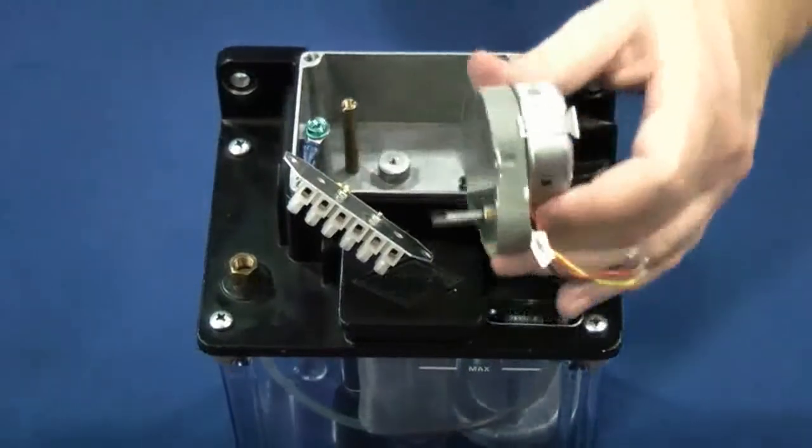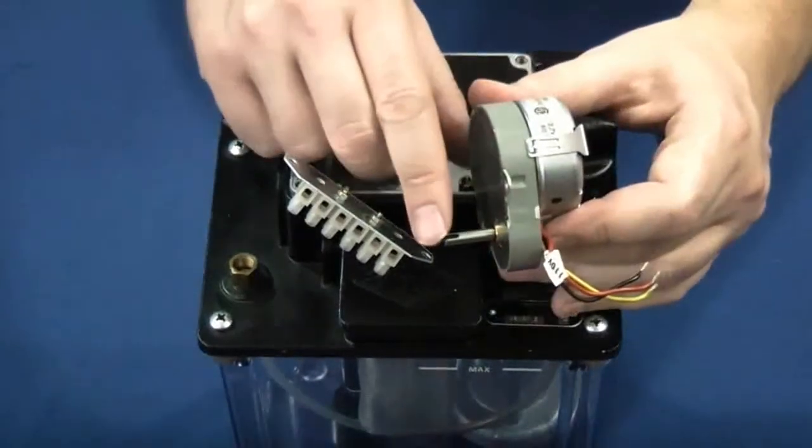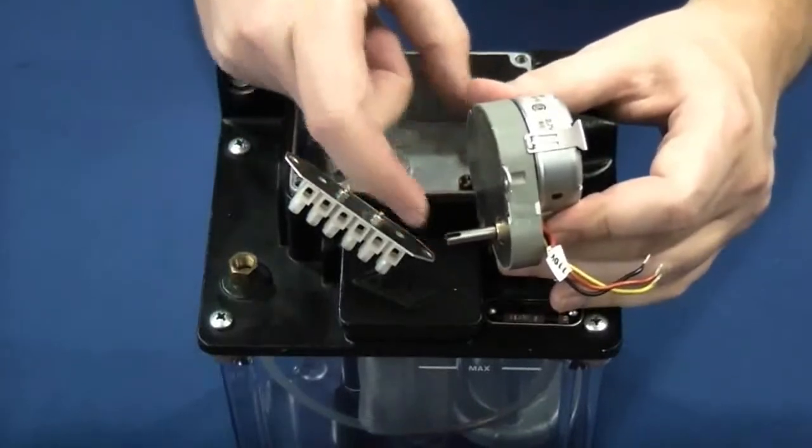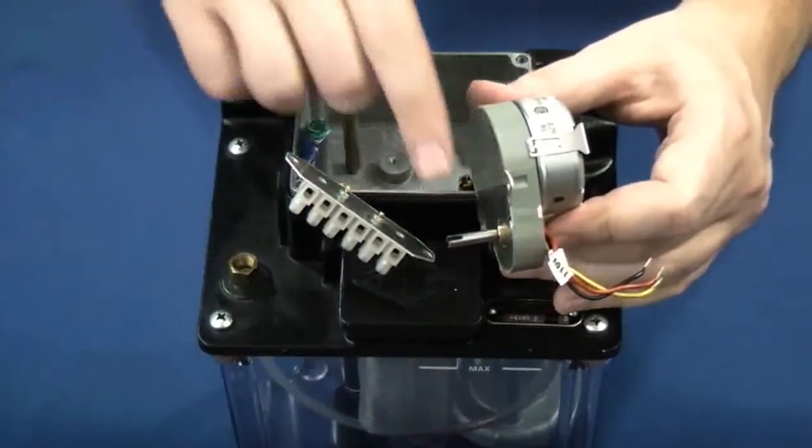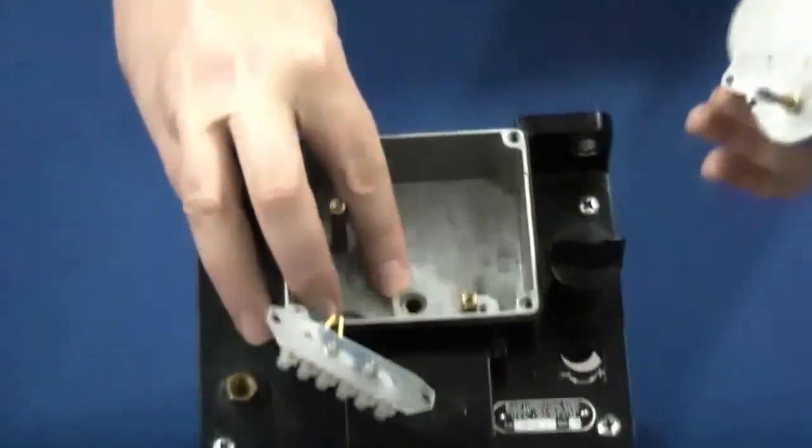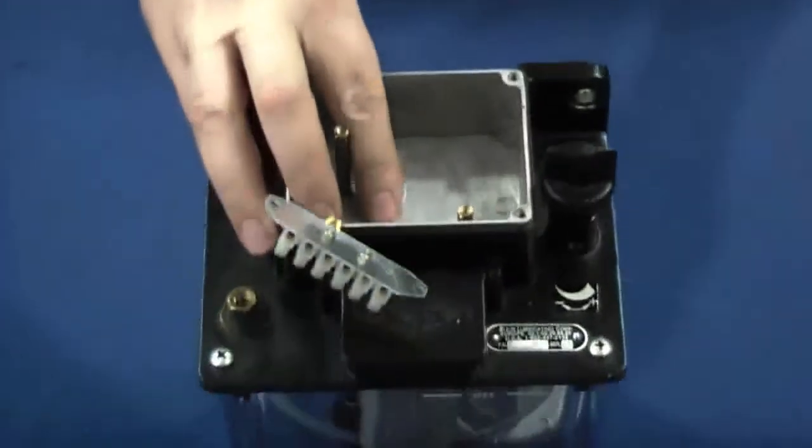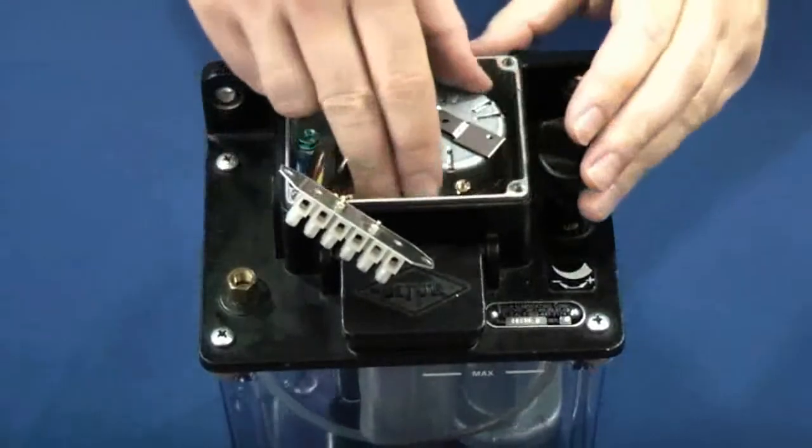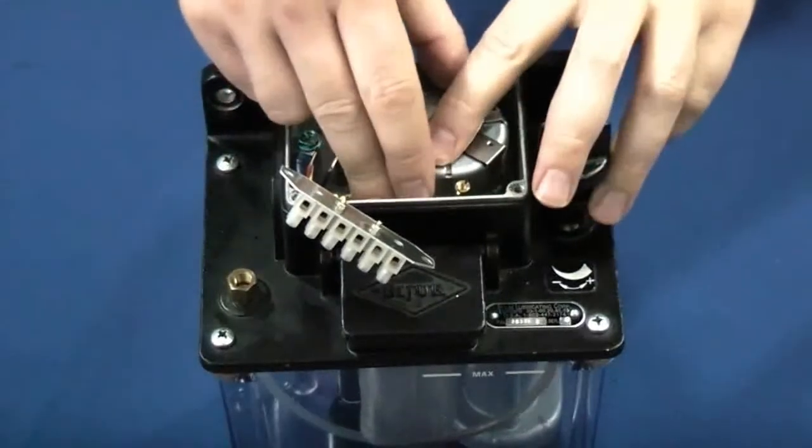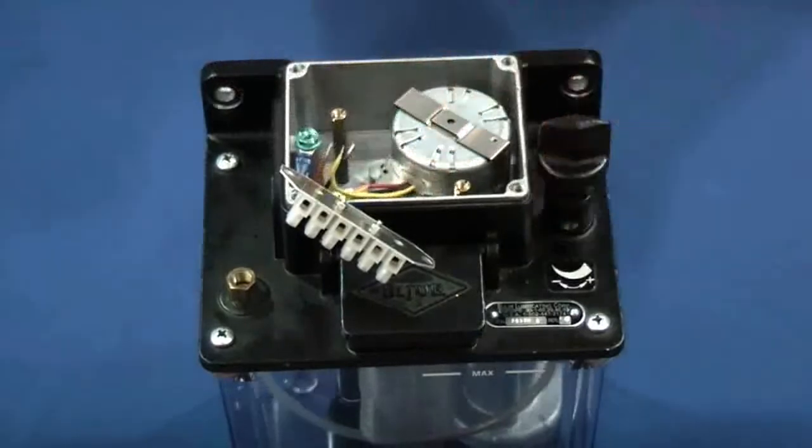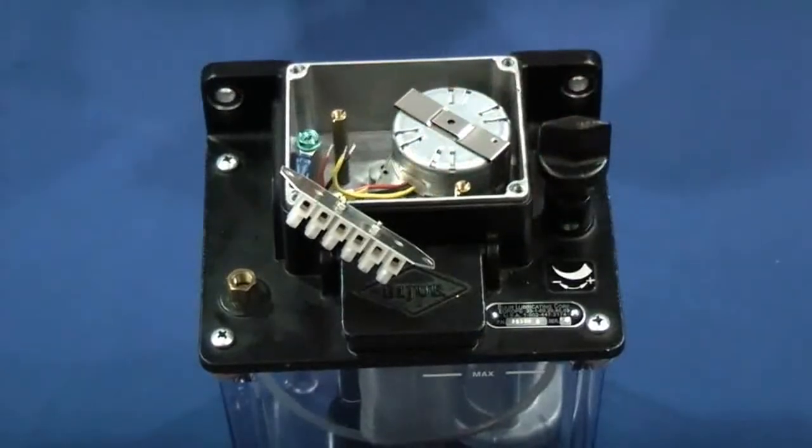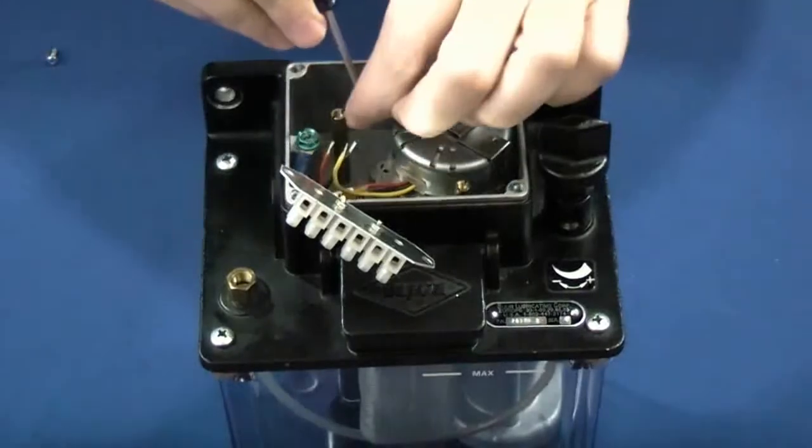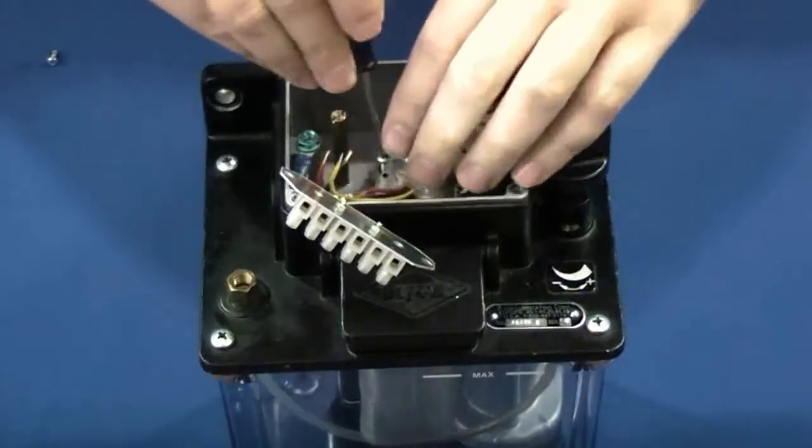On the motor gearbox shaft, you will notice there is a fork slot right here. We want to make sure that that lines up with the gear that's inside the housing. So we'll just insert that. Make sure it's tight. Now we will replace the screws on each side of the motor.